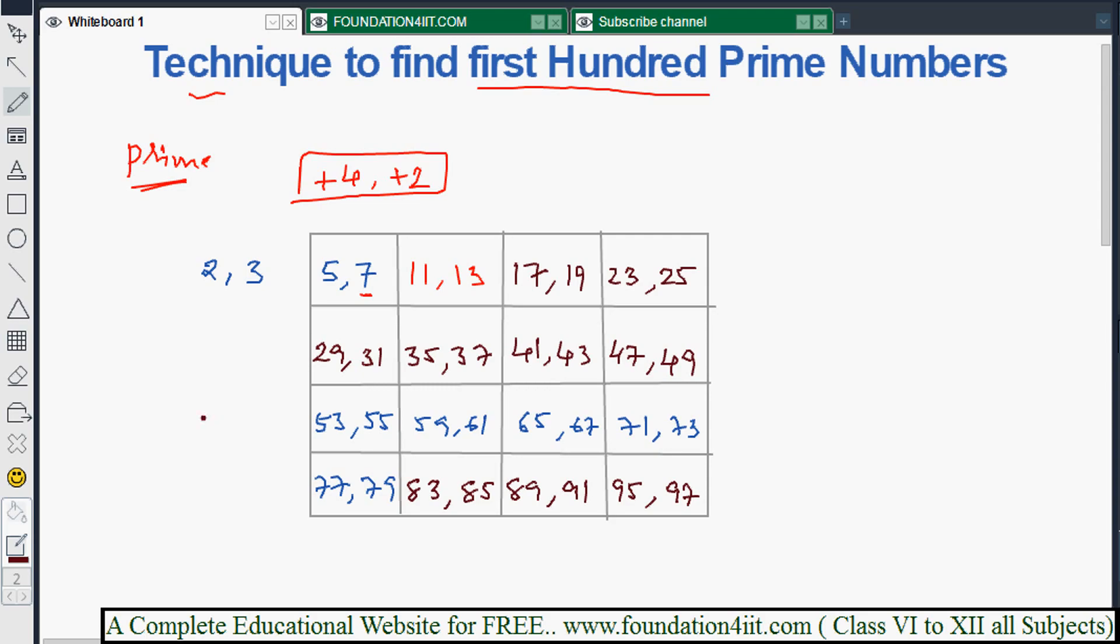After filling this table, now we need to strike out multiples of 5 and 7 from it. Multiples of 5 means the 5 times table. Strike out multiples of 5 except the first one: 25, 35, 55, 65, 85, 95. Also strike out multiples of 7.